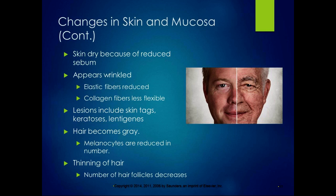The skin also becomes drier because of reduced sebum and appears more wrinkled because of reduced elastic fibers; the collagen fibers are less flexible. Sometimes you get lesions like skin tags or keratoses — those little darkened spots. Looking at a comparison of younger and older skin, you can see the differences clearly. Hair grays because melanocytes are reduced in number, and hair thins because the number of hair follicles decreases. Skin appearance is often how we identify whether someone looks older or younger.